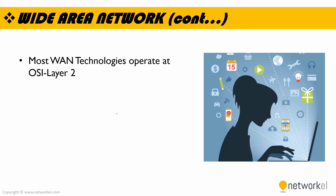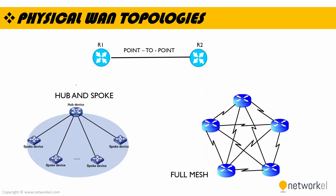Keep in mind that most wide area network technologies operate at OSI layer 2, which is the data link layer. Here are the topology types of the physical wide area network. We have a point-to-point WAN topology, where we have a point-to-point communication between two end devices.